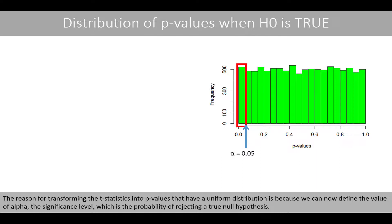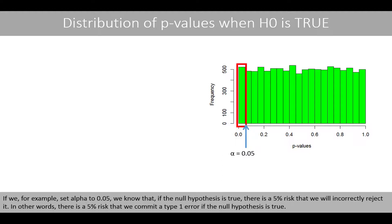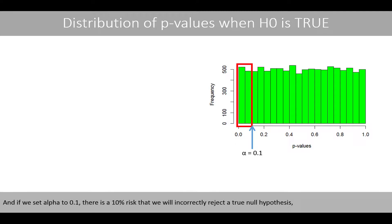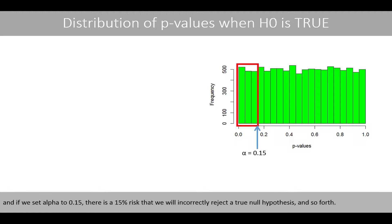The reason for transforming the t-statistics into p-values that have a uniform distribution is because we can now define the value of alpha, the significance level, which is the probability of rejecting a true null hypothesis. If we set alpha to 0.05, we know that if the null hypothesis is true, there is a 5% risk that we will incorrectly reject it. In other words, there is a 5% risk that we commit a type 1 error if the null hypothesis is true. And if we set alpha to 0.1, there is a 10% risk that we will incorrectly reject a true null hypothesis. And if we set alpha to 0.15, there is a 15% risk that we will incorrectly reject a true null hypothesis, and so forth.